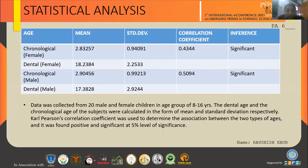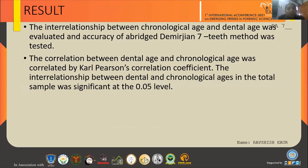The data was statistically analyzed in the form of mean and standard deviation. Karl Pearson correlation coefficient was also used to determine the association between the two types of ages — dental age and chronological age — and it was found positive and significant at the 5% level of significance. The correlation between dental and chronological age was confirmed by Karl Pearson correlation coefficient, and the estimated age showed a positive result.